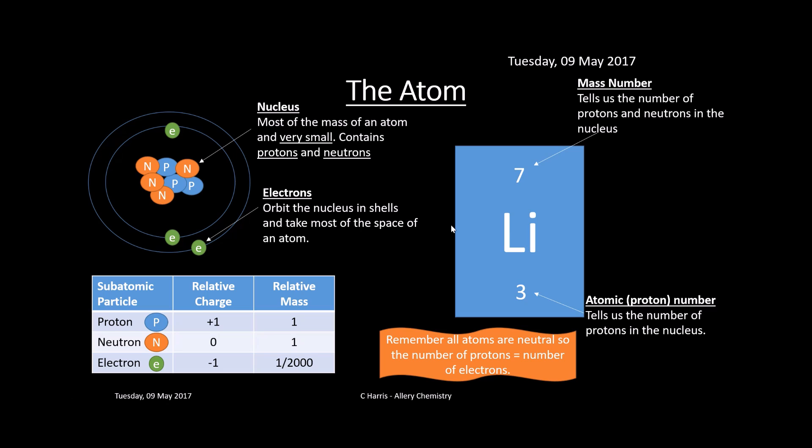In the periodic table, each element has two numbers. The bigger number is called the mass number — it tells us the number of protons and neutrons in the nucleus. The smaller number is called the atomic or proton number, and it tells us the number of protons in the nucleus. In atoms, the number of protons equals the number of electrons. To work out the number of neutrons, you simply subtract the atomic number from the mass number.